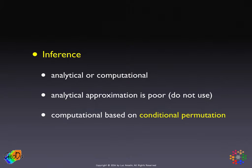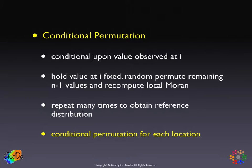Instead, we use a computational approach based on a flavor of the permutation technique called conditional permutation. It is called conditional permutation because we keep the value observed at a given location out of the permutation exercise. The statistic is z_i times its spatial lag, so we hold z_i fixed and randomly reshuffle the rest of the values at the n−1 locations, letting them fall as neighbors of i to compute the local Moran. We repeat this many times to get our reference distribution.